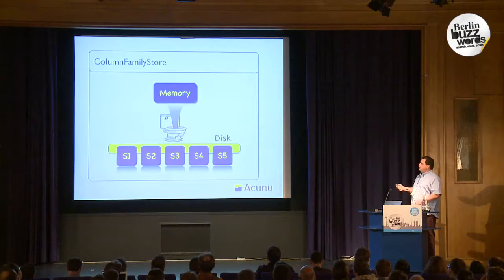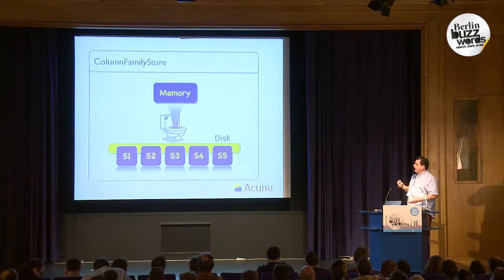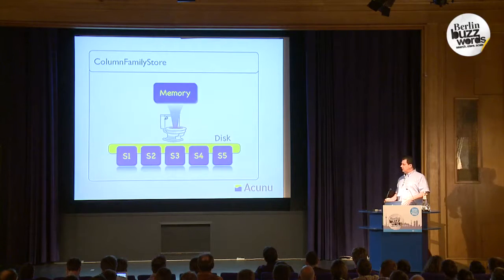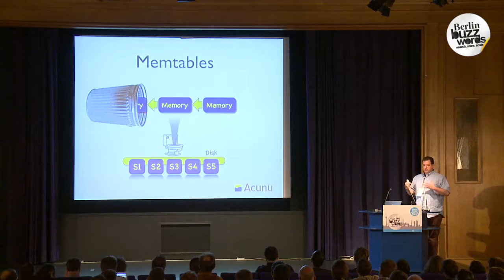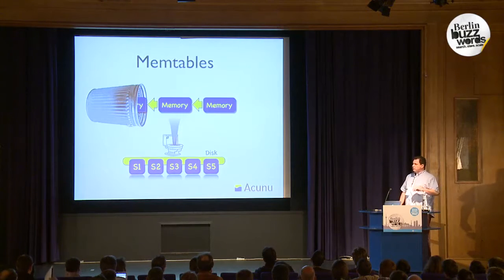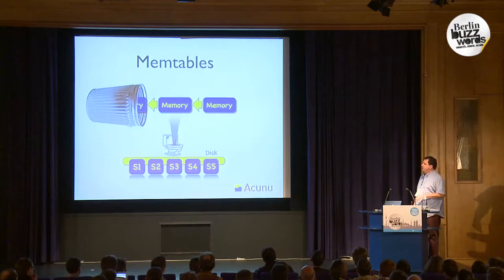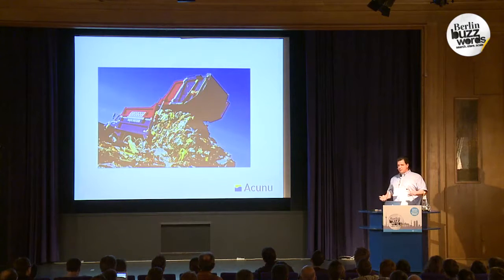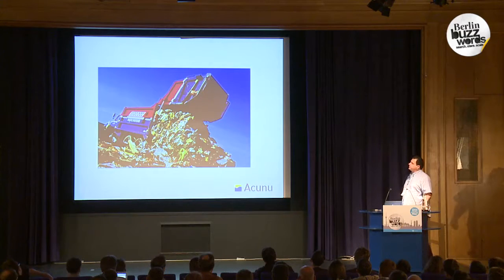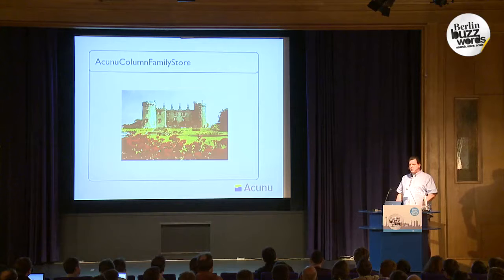The way we use this at Acunu for our commercial distribution is we replace the log-structured merge tree in Cassandra. This is called the column family store abstraction, which is where all of this is contained in Cassandra. In the log-structured merge tree, we buffer up a bunch of data and then flush it to disk as SSTables. In reality, we buffer up a bunch of data, and when the threshold is hit, we switch it out and switch in a new mem table, allocating more memory. We then asynchronously flush the older mem table, and when done, just toss it away as unreferenced objects.